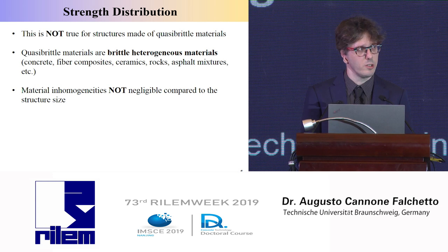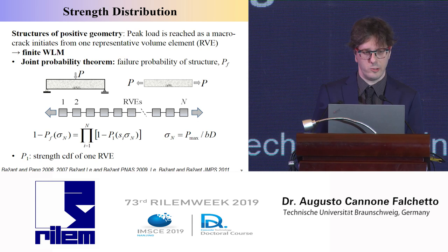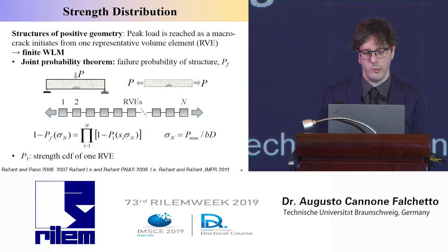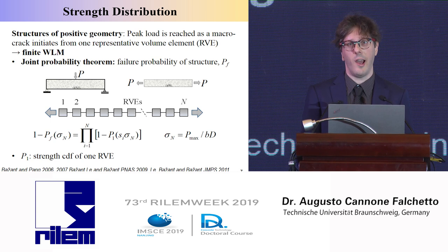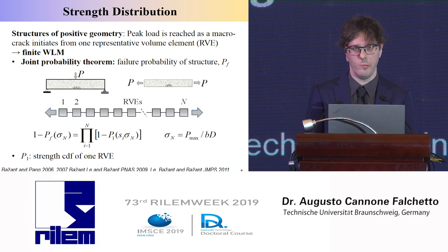For this material, we have that material inhomogeneities are non-negligible compared to the structure size. For specific types of structures, for structures with notch geometry, when the thick load initiates from a representative volume element, we can use a different type of representation. We can represent the material as a finite chain of elements or a representative volume element, and use the joint probability theorem to determine the failure probability of the entire structure.